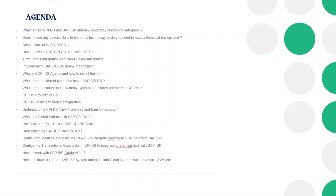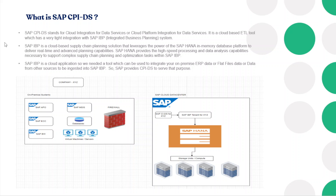Then comes one advanced topic which is about working with OData APIs, followed by connecting IBP with AWS or Azure for building your set of reports. To start off with this session, I'll just begin by introducing what CPI DS is.